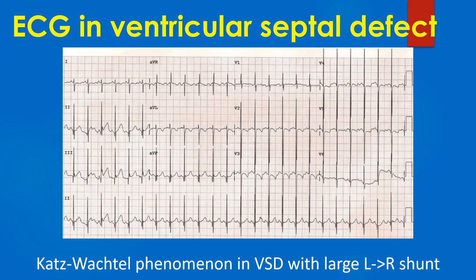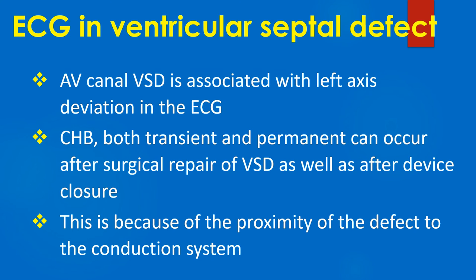Since the QRS amplitude is high, it often overshoots the margin of the ECG graph, as seen in lead V4 in this case. It may be necessary to take ECG in half standardization to capture the full QRS complex without overlapping in simultaneous multichannel recordings. Large anterior electrocardiographic forces are due to the hypertrophied RV and late posterior forces due to the hypertrophied LV. AV canal VSD is associated with left axis deviation on ECG. Complete AV block — both transient and permanent — can occur after surgical repair of VSD as well as after device closure, due to the proximity of the defect to the conduction system.